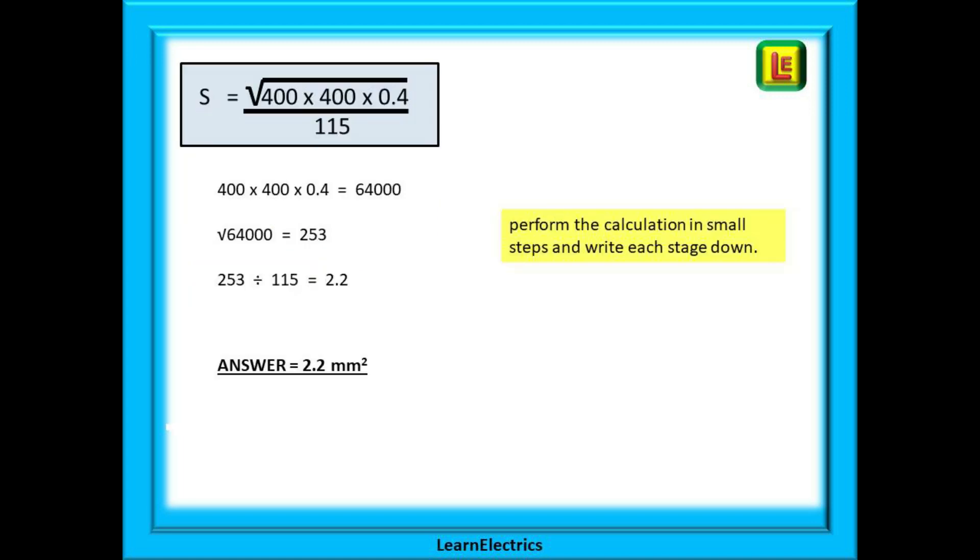It is now just a matter of putting these numbers into the formula and pressing the buttons on our calculator. Here are the numbers inserted into the formula. I find it best to split the calculation into several easy steps rather than to attempt to do it all in one go. So 400 times 400 times 0.4 gives us 64000 and the square root of 64000 is 253 rounded up. And 253 divided by 115 gives us an answer of 2.2 millimeters as a minimum size.